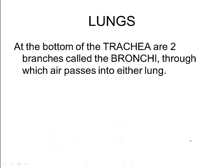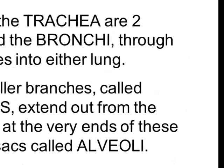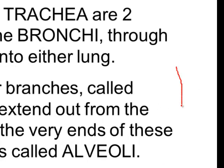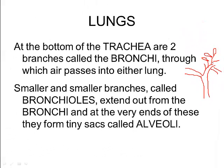Once air travels down the windpipe, we have to get it into our lungs. At the bottom of the trachea are two branches called bronchi, through which air passes into either lung. The bronchi branch off into smaller and smaller bronchioles, and at the very end of the bronchioles are tiny air sacs called alveoli. Think of it like an upside-down tree: the trunk is the trachea, the major branches are the bronchi, the smaller branches are the bronchioles, and the leaves are the alveoli.